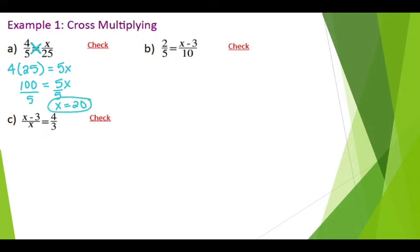We should always check our answers. So just to double-check, I'm going to plug in 20 for x and see if it gives me a true statement. So 20 over 25 reduces to four-fifths. So we can see that it is correct.